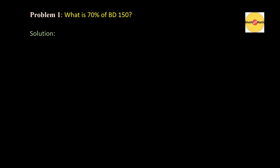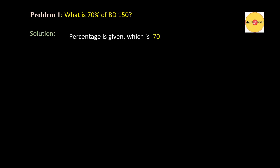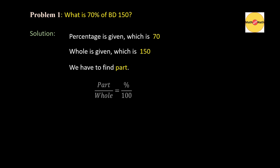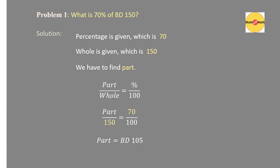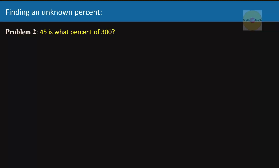Let's solve a model problem: What is 70% of 150? In this problem, the percentage is given, which is 70, and the whole is given, which is 150. We have to find the part. Using the percentage formula and substituting the given values, on simplification we get 105.